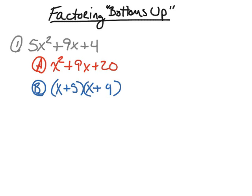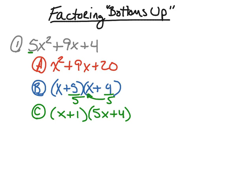We're not quite done yet. We're going to take the 5 and 4 we just found and divide by 5 — that's the leading coefficient. 5 divided by 5 is 1. If I try to divide 4 by 5, I get a decimal, so instead we bring that 5 up in front of the x, making it 5x + 4. This is why we call it the 'bottoms up' method — the bottom number comes up in front of the variable. Therefore, the factors are (x + 1) and (5x + 4). Multiplying these using FOIL gives 5x² + 9x + 4.